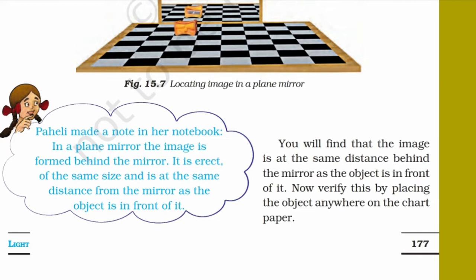Note the position of the image. Now shift the object to the boundary of the fourth square, and again note the position of the image. Did you find any relation between the distance of the image from the mirror and that of the object in front of it?